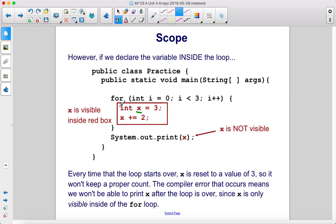So if we declare x here, then it's only visible inside this red box, which means once the curly brace has ended and we're outside the loop, we cannot see this variable anymore. It's not visible.